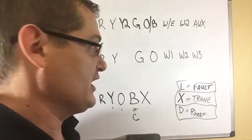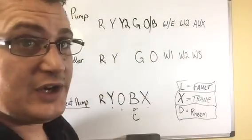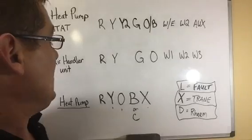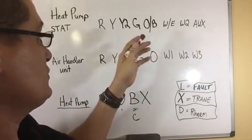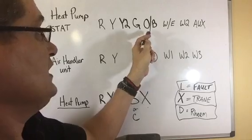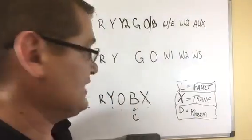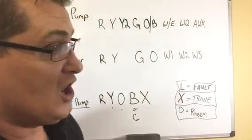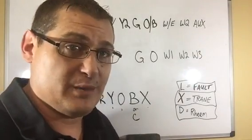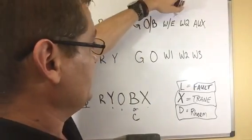Here's our typical heat pump thermostat that we had earlier. We've got R, which is power, Y, which is compressor, Y2, which we're not going to use, G is the fan, O/B or O and B, however the stat's hooked up, is for reversing valve. W, E, W2 are auxiliary. Those are all for the backup heat when we're talking about heat pumps. Really, these could all be the same terminal. You could jumper them all together and it's probably going to work out just fine for you.